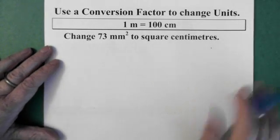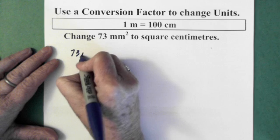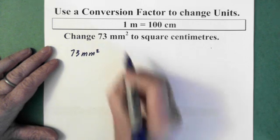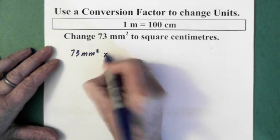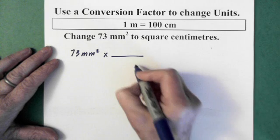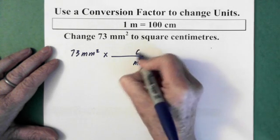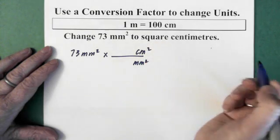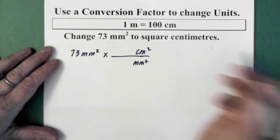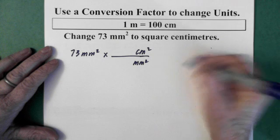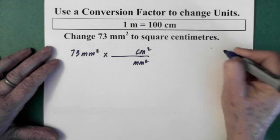Changing 73 millimeters squared to square centimeters. So, we start with, again, our 73 millimeters squared. Put our multiplication sign. Put our line. Put millimeters squared down here. And centimeters squared on the top of the dividing line. The relationship with centimeters and millimeters. Let's put it over here.